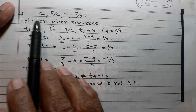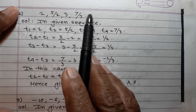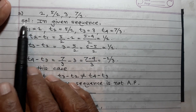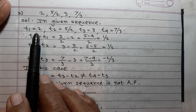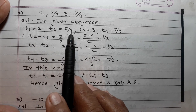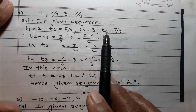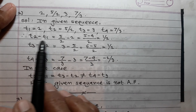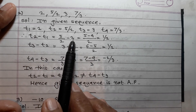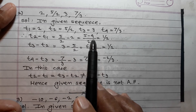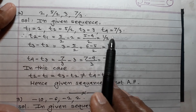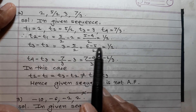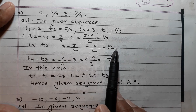Question 2: 2, 5/2, 3, 7/3. Solution: t1 = 2, t2 = 5/2, t3 = 3, t4 = 7/3. Find differences: t2 - t1 = 5/2 - 2 = (5-4)/2 = 1/2. t3 - t2 = 3 - 5/2 = (6-5)/2 = 1/2.